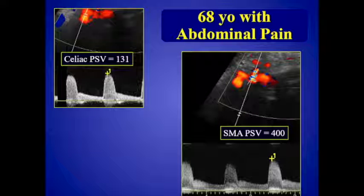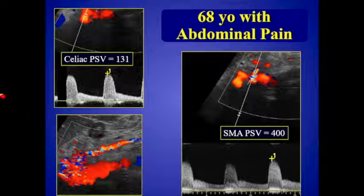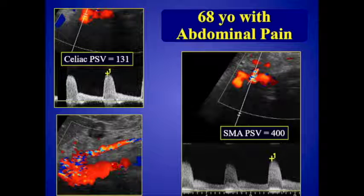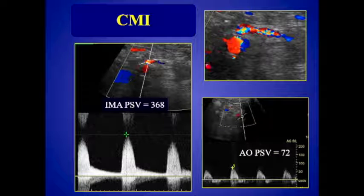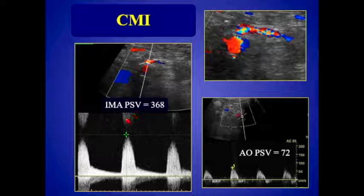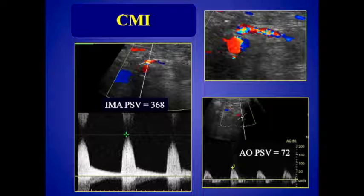Here's an example: a 68-year-old with abdominal pain. The celiac peak systolic velocity is 131 cm/s — within the normal range, under 200. But looking at the superior mesenteric artery, there's aliasing and a color bruit artifact at the origin. When we place the sample volume angle-corrected to the direction of flow, the velocity is 400 cm/s — clearly a high-grade stenosis. Checking the inferior mesenteric artery, it also shows aliasing with a peak systolic velocity of 368 cm/s, compared to an aortic velocity of 72 cm/s. So we have two-vessel disease consistent with chronic mesenteric ischemia.